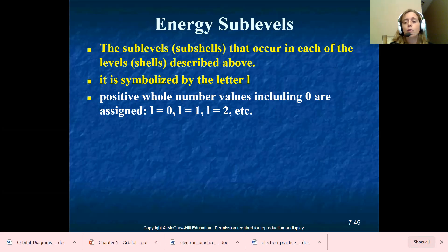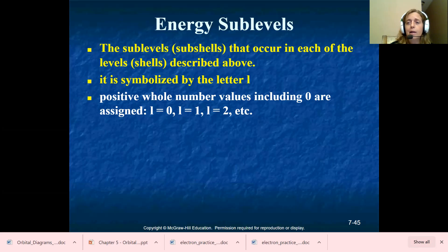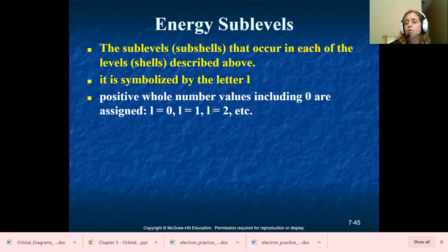What you're doing here is kind of like if you're on a basketball team and you have jersey numbers — numbers associated with your jersey so they can identify people. We're going to look at the letter L as your sub shells — these are the letters that you stop in within the periodic table. If you stop in S, L is going to equal zero. If you stop in P, L is going to be one. D, L is going to be two. F, L is going to be three. So these are like jersey numbers assigned to these values and they don't change.